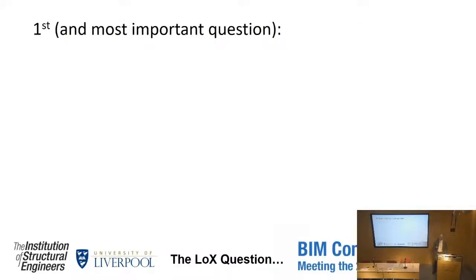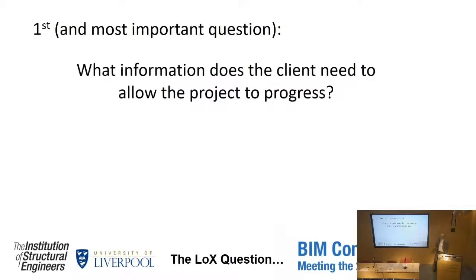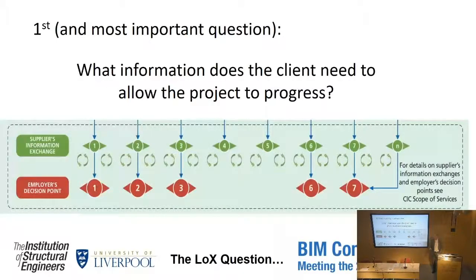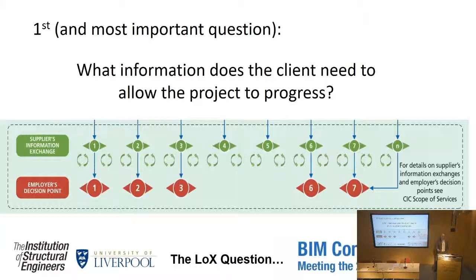The first and most important question we need to ask is: what information does the client need to allow the project to progress? Any more information than that and we're either wasting the client's money or wasting our own money. So we need to be absolutely crystal clear about this. This is one of the fundamental deliverables of Level 2: the Employer's Information Requirements — the EIR. It's the brief that we have to hit, and we need to work with the client to be clear about that so we can hit their objectives.